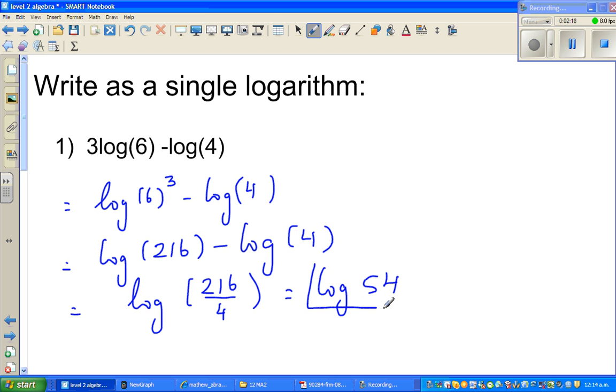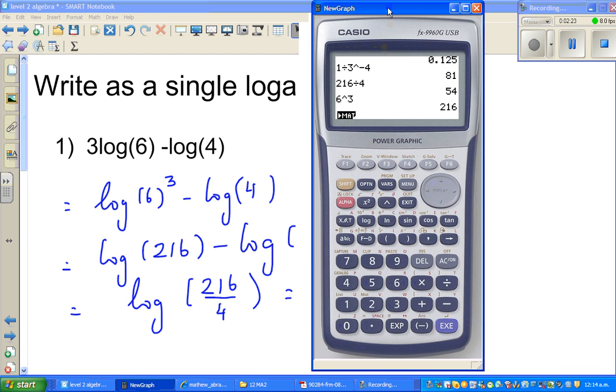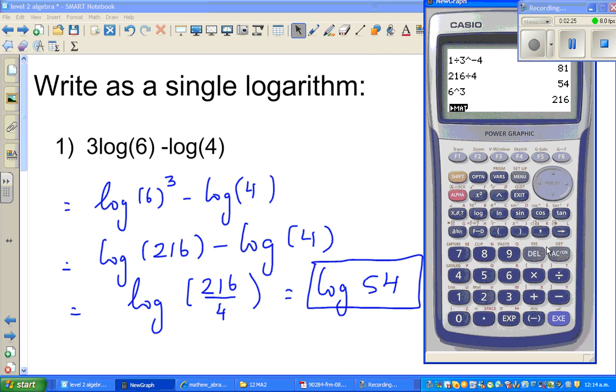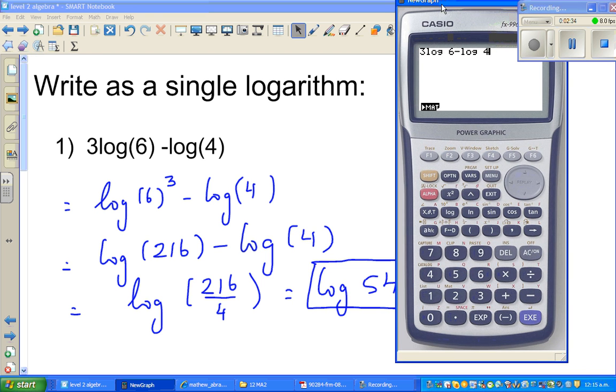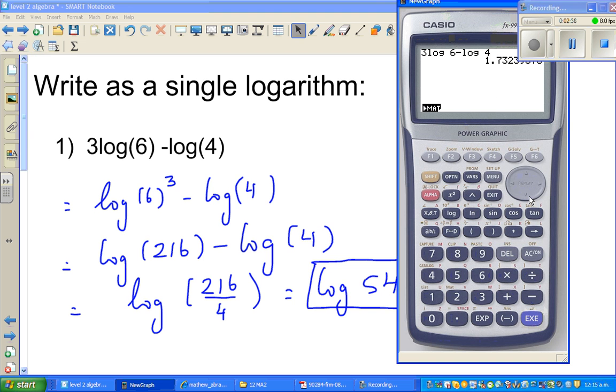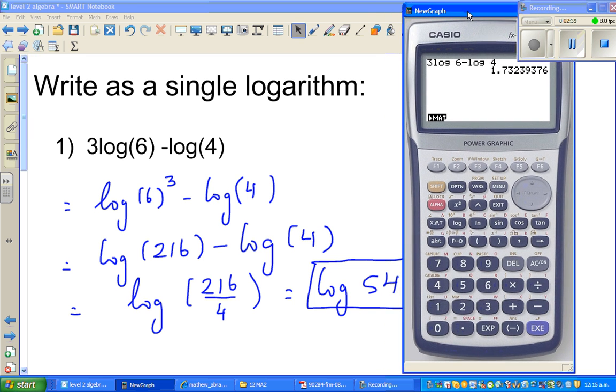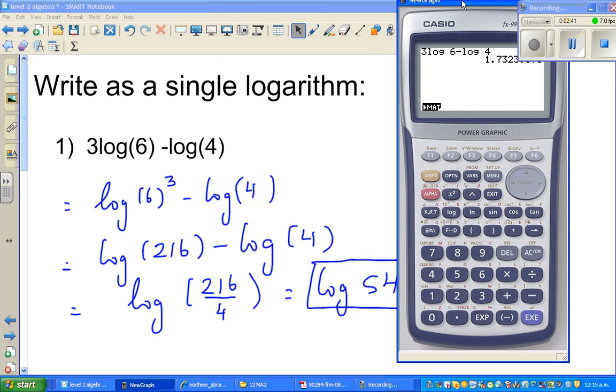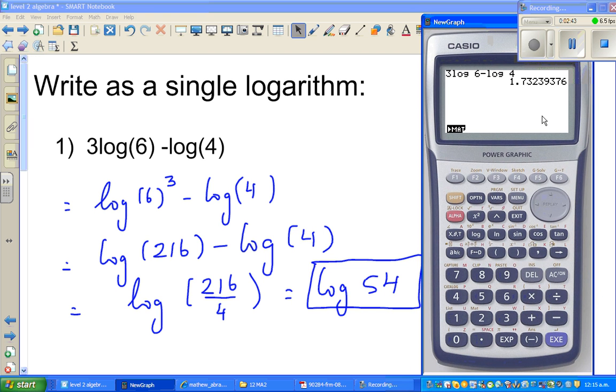Now, how can you check your answer? Again, on the calculator. So, you can go like this. You press in, type in, 3 log 6 minus log 4. It will be a number. Let me show it here. Execute, that is 1.7323 whatever. And then if you press log 54, it should be the same answer. That is the same. So, your answer is right.